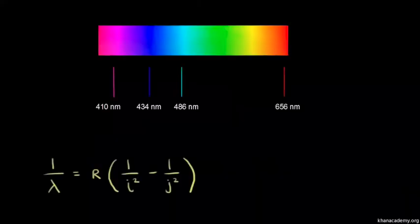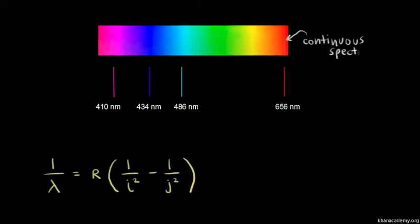Most of you know the famous story of Isaac Newton, where he took a narrow beam of light and put it through a prism. The prism separated the white light into all the different colors of the rainbow. You might see something like a rectangle showing all these different colors. I'm going to call this a continuous spectrum — it's continuous because you see all these colors right next to each other, blending together.